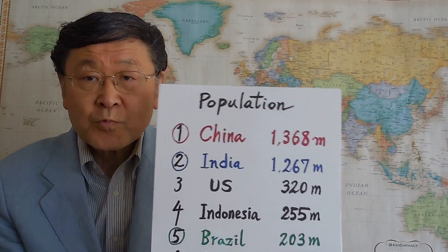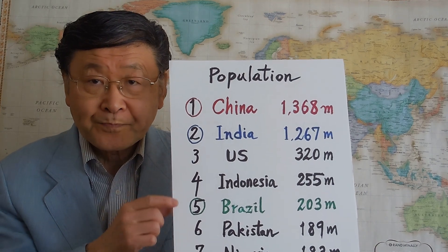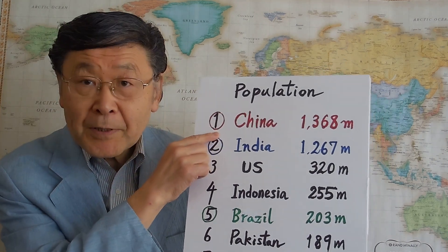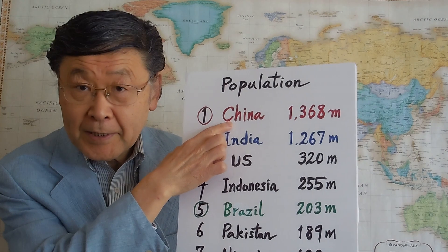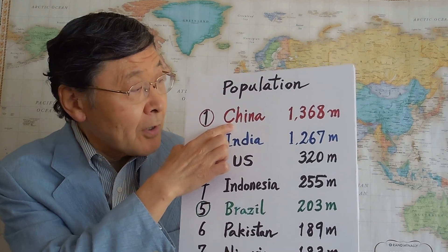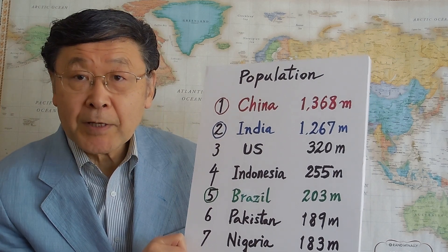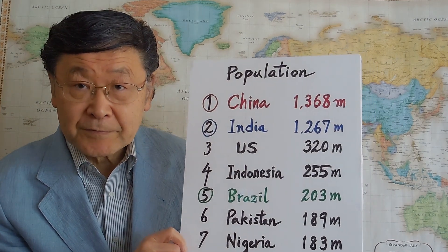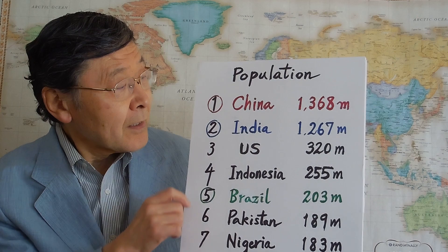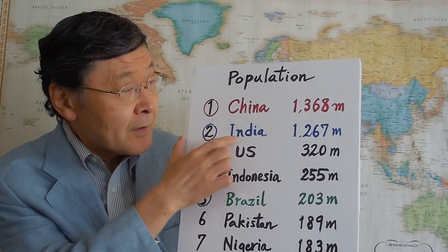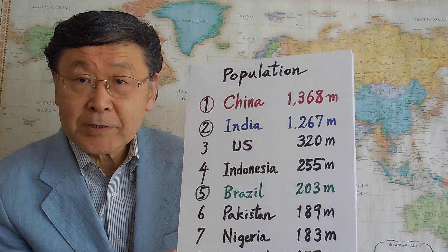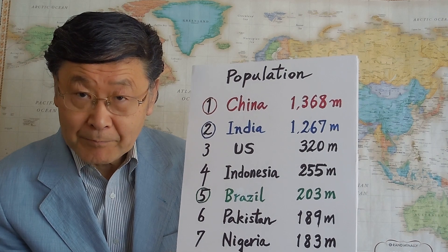We are going to talk about population and economic development. Here is a list of countries with large population. The most populous country in the world is China, with 1,368,000,000 people as of 2015, followed by India with 1,267,000,000 people.